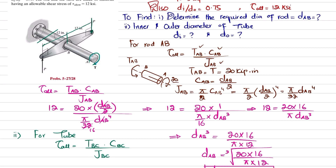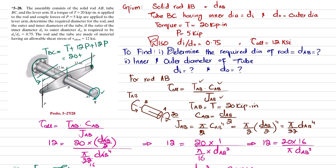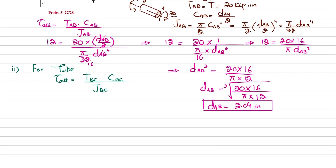Our net resisting torque T_BC must be anticlockwise to maintain equilibrium. So T_BC = T + 12·P + 12·P = 20 + 12(5) + 12(5) = 20 + 60 + 60 = 140 kip·inches. Therefore T_BC = 140 kip·inches.